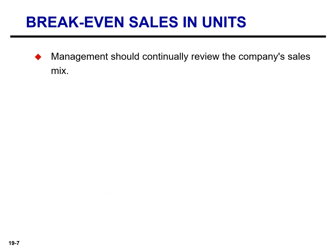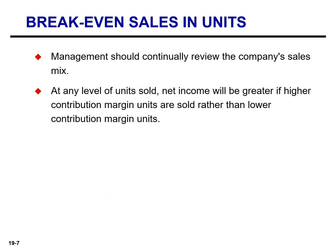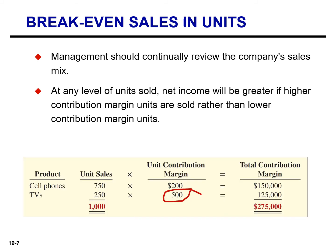Management should continually review the company's sales mix. At any level of units sold, net income will be greater if higher contribution margin units are sold rather than lower contribution margin units. For Vargo, the TVs produce the higher contribution margin. If Vargo sells 300 TVs and 700 cell phones, net income would be higher than in the current sales mix, even though the total units sold are the same.